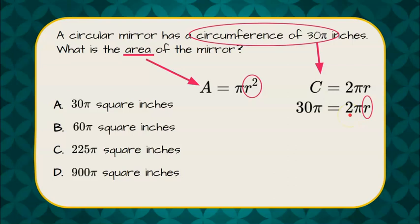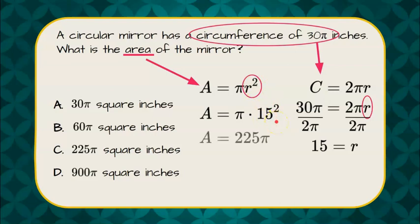We are going to solve for the radius by dividing each side by 2 pi. When we do that, 30 pi divided by 2 pi is 15, giving us a radius of 15, which we put in our area formula, square it, and we get 225 pi.